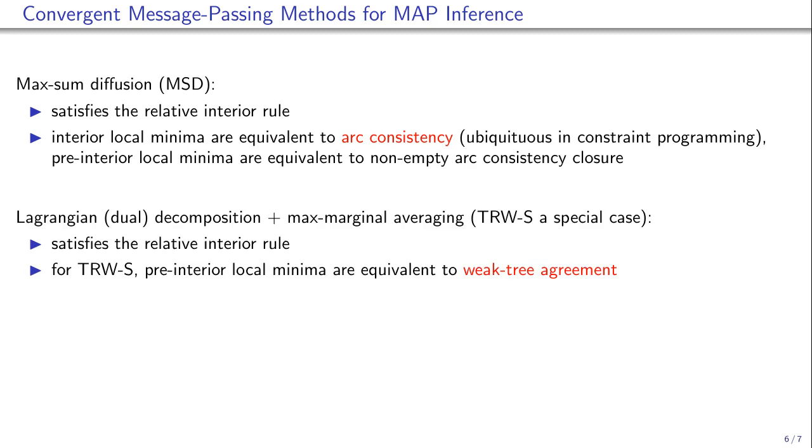Dual decomposition optimized by max-marginal averaging also satisfies the relative interior rule. Its special case is the TRWS algorithm where pre-interior local minima correspond to weak tree agreement.